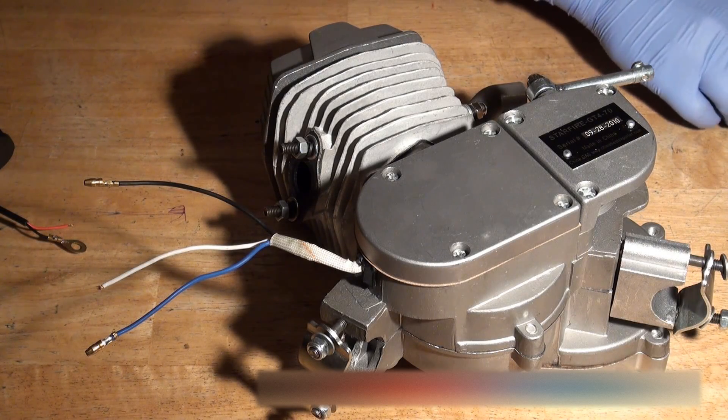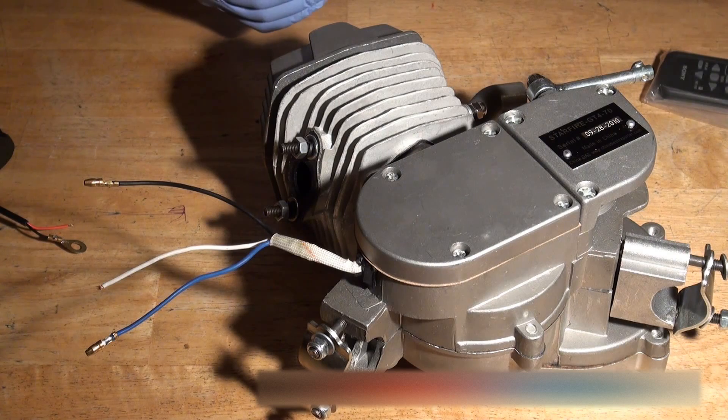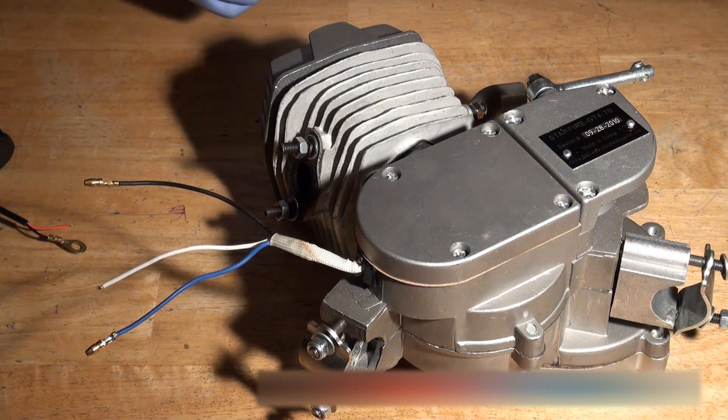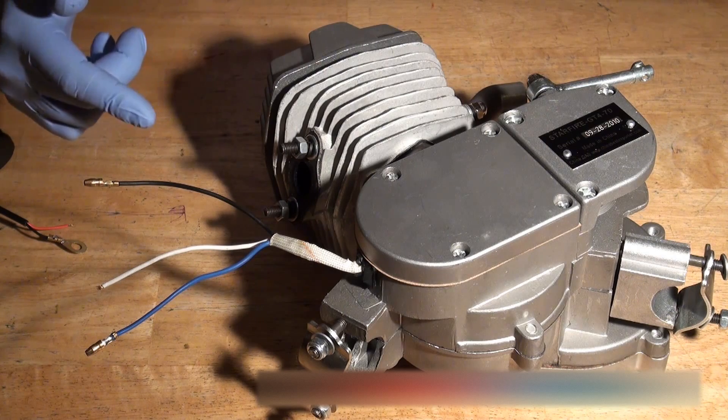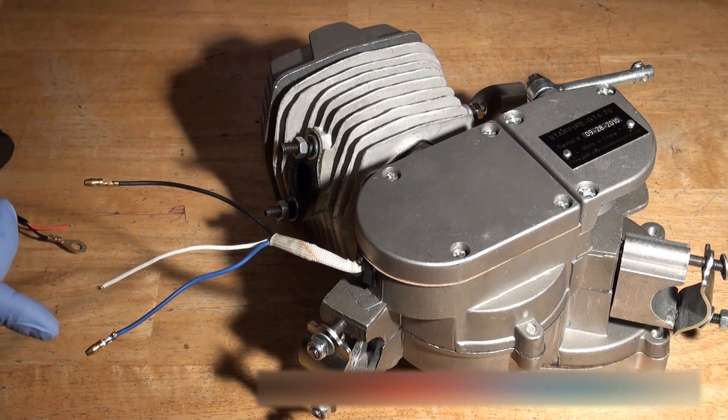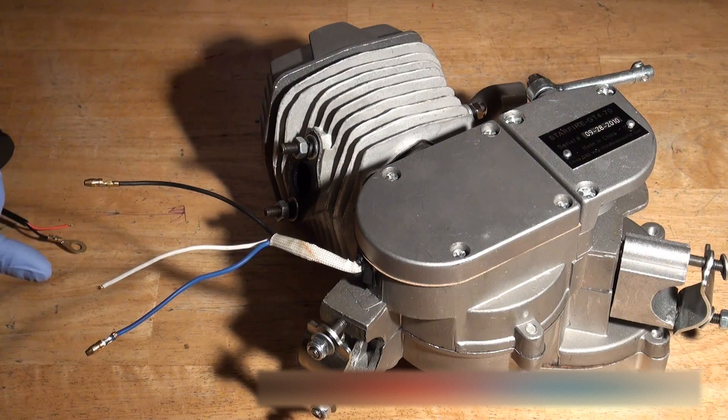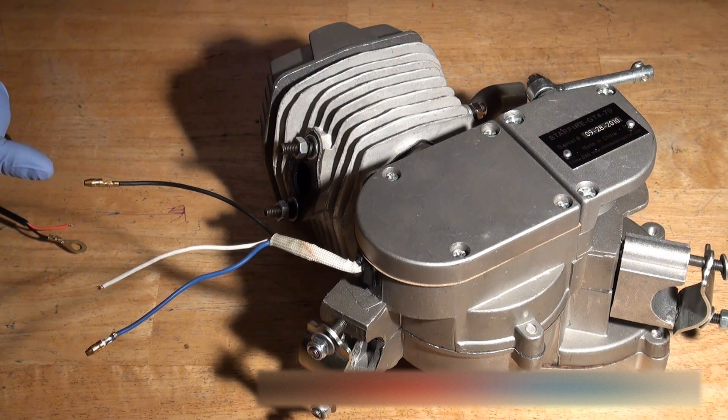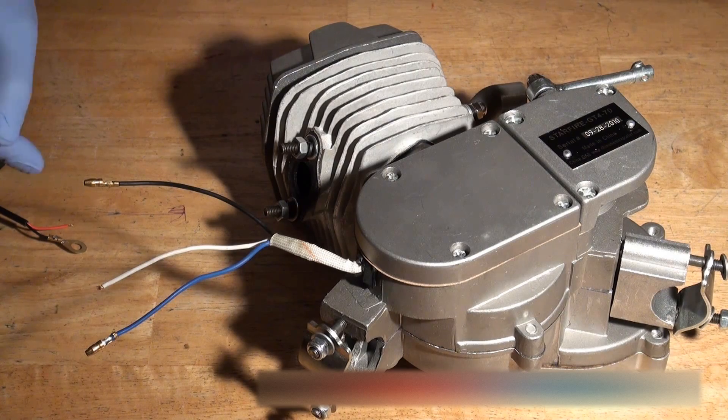What we're going to be talking about today is the wiring side of your bicycle engine kit. Now as it comes, the wires coming off the engine are three wires: one is a blue wire, the other is a white wire, and the last wire is a black wire.